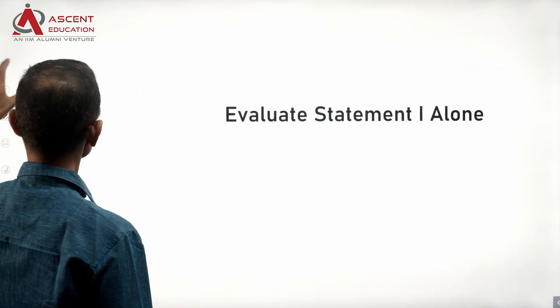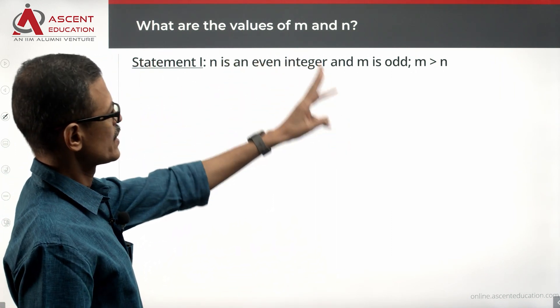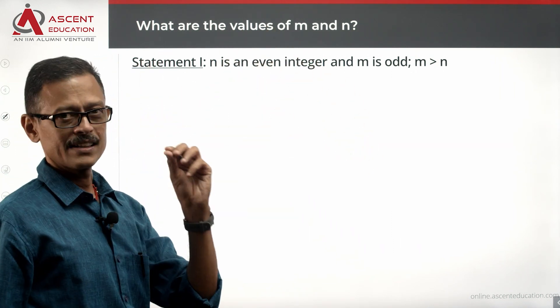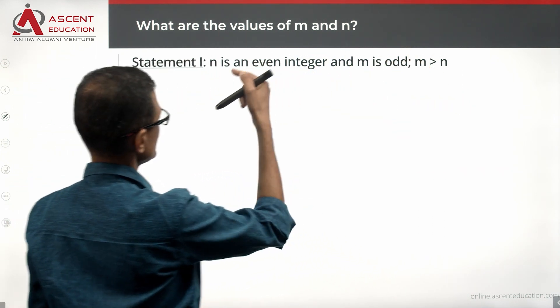Take a look at statement 1 alone and see whether that is sufficient. N is an even integer and M is odd. M is greater than N.